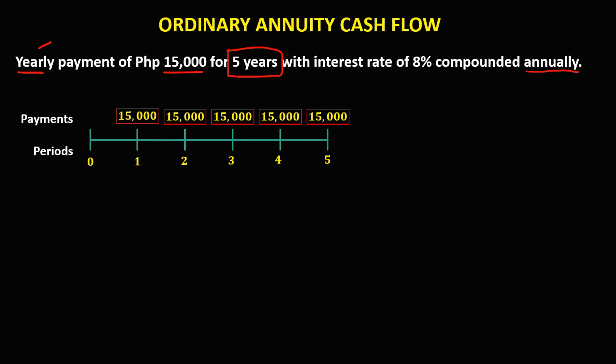Using the compound interest formula, the future value is equal to the periodic payment times the quantity (1 + j)^n, where j is the interest per period and n is the number of periods. Here, n equals the compounding period times the time, and j equals the rate over the compounding period. Since compounded annually, m is equal to 1.